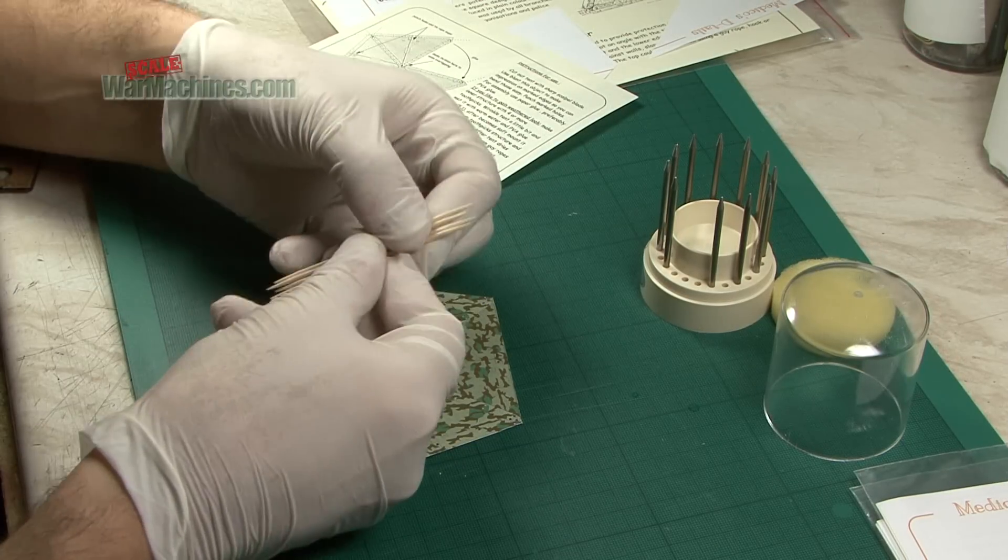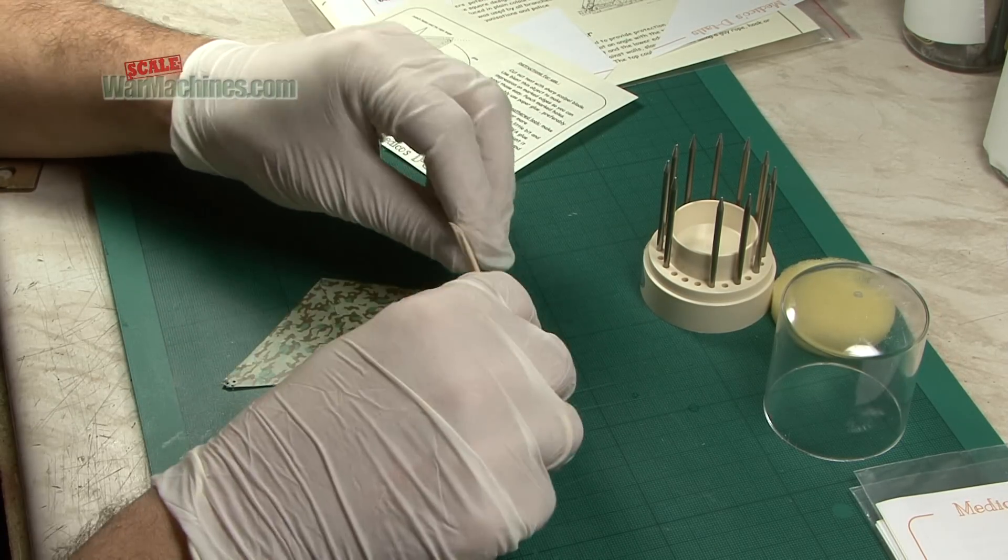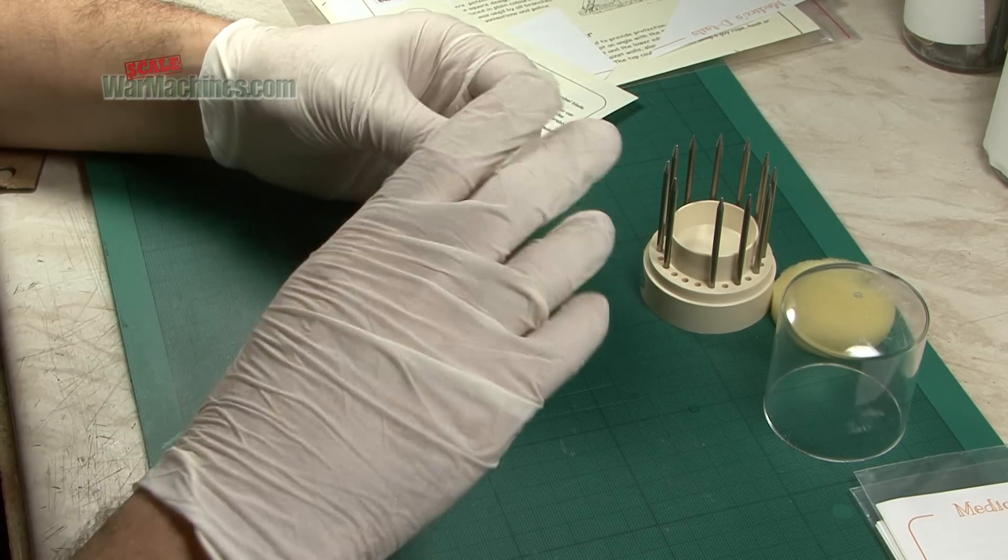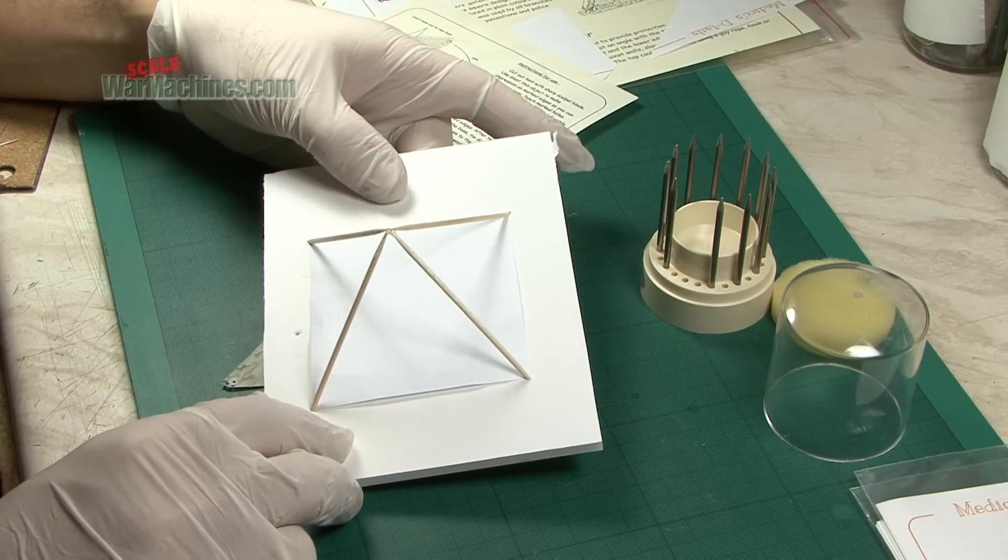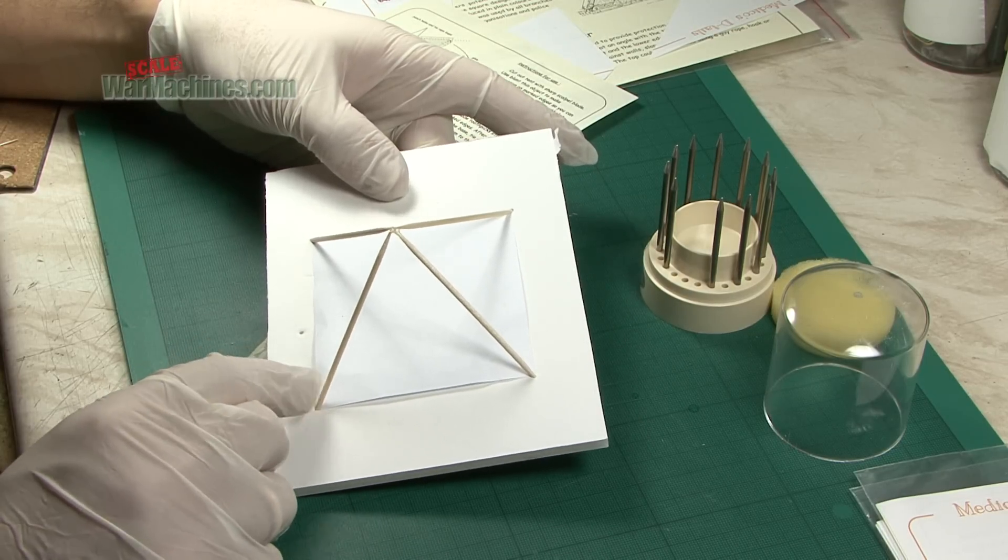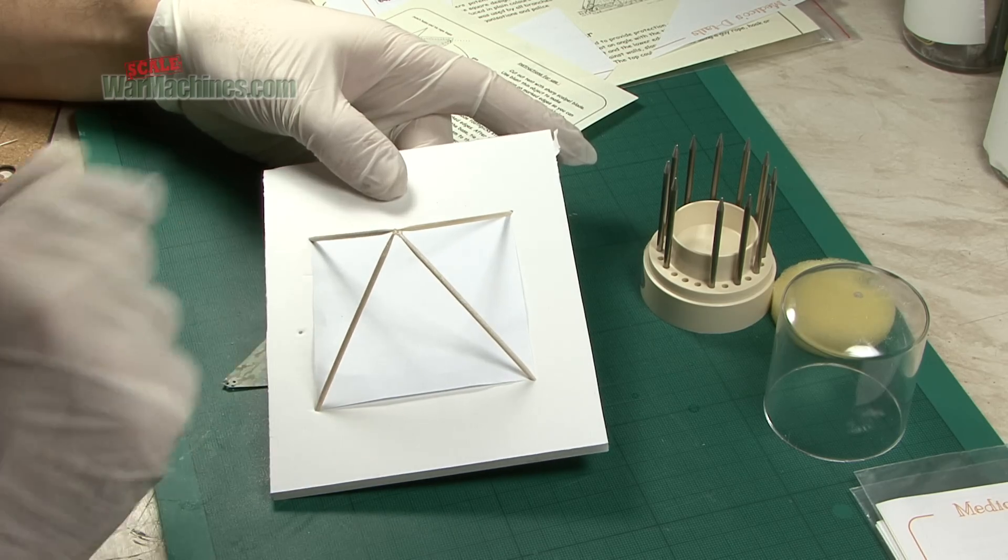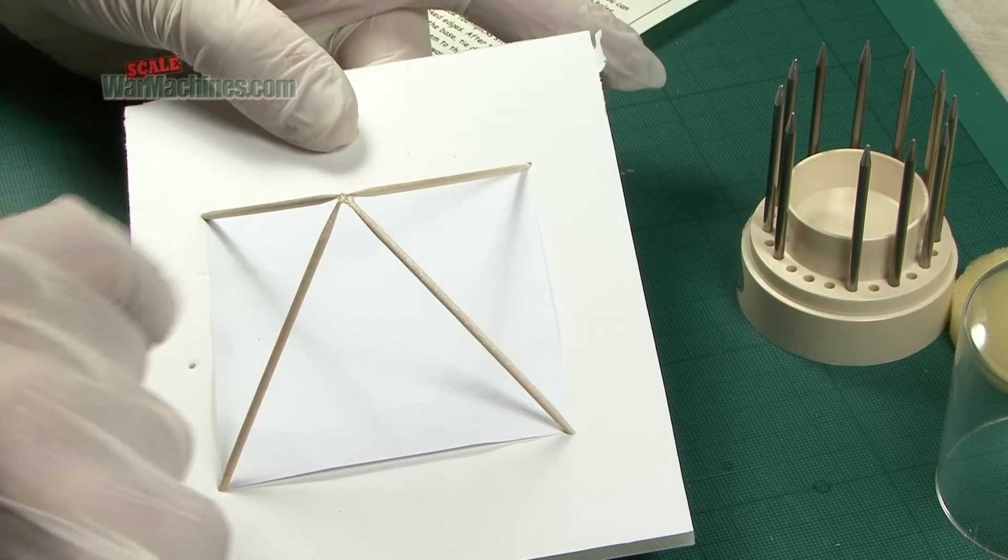Where the toothpicks come in is you use them to create a structure that you're going to drape the zelt barn over. We stuck the toothpicks just into a bit of foam board and super glued them and this is going to be our structure.